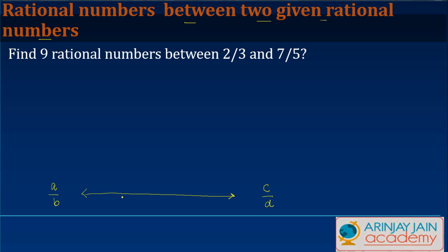One thing is you can do it by trial and error, but that is not always the preferred option. So what you try to do is convert both these rational numbers in some form.